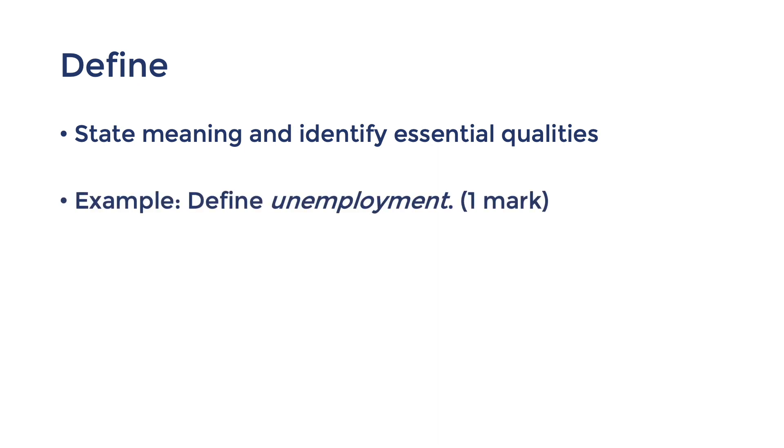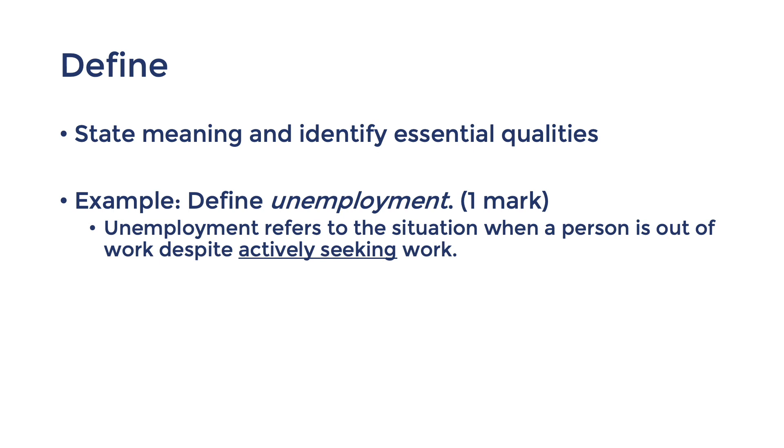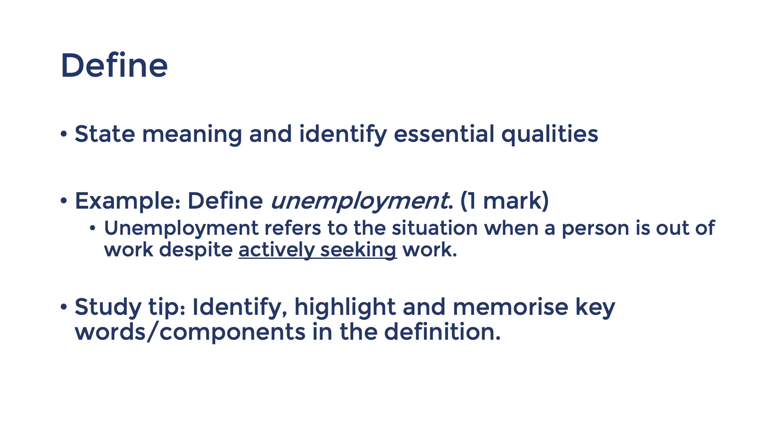Let's start with some easy ones, like the one to two markers. Define is one of the most basic short answer questions. Being able to define is also an essential skill that is used in extended responses and the more complex short answer questions. To define means to state the meaning and identify essential qualities. You'll only get the marks if you include all the essential ingredients in the definition, not for providing vague characteristics or examples. For example, let's define unemployment. Unemployment is defined as the situation where a person is not employed and is actively seeking work. If you simply say that unemployment is when someone doesn't have a job, you have given me a general characteristic and that's not enough to get the marks. You can use different wording, but you will lose marks if you don't include the essential ingredient that the person must be actively seeking. This is why I tell my students that a good way of revising definitions is to identify, highlight and memorize the keywords and components in the definition.